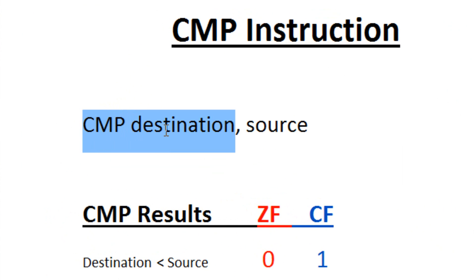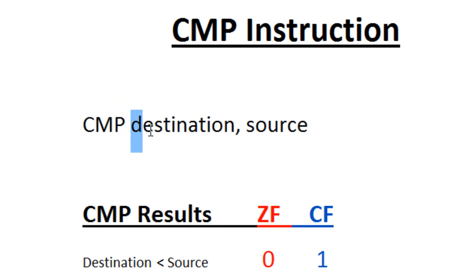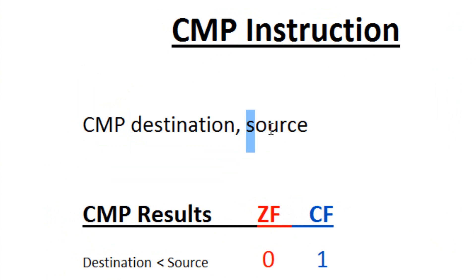This is the syntax of a compare instruction. We start off by typing in CMP, then a space, then our destination operand, a comma, another space, and then our source operand. The source operand is subtracted from the destination operand and only the flags are affected.